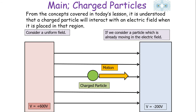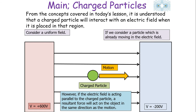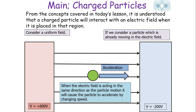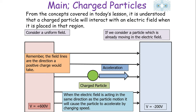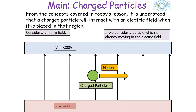If we consider a particle already moving in an electrical field, it will wish to continue in that direction of motion — that is inertia, from Newton's laws. However, if the electrical field is acting parallel to the charged particle, a resultant force acts in the same direction as the motion, causing the particle to accelerate by changing speed. A positive charge moving parallel to a field line will speed up in the direction of the field line, while a negatively charged particle moving parallel to a field line will speed up in the opposite direction.